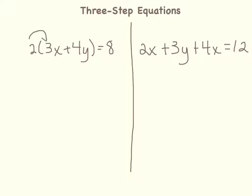2 times 3x is 6x, and 2 times 4y is 8y. So I have 6x plus 8y equals 8.